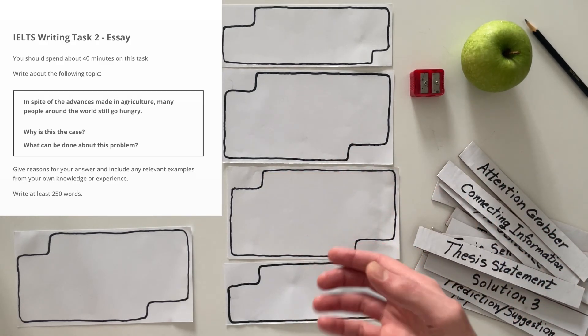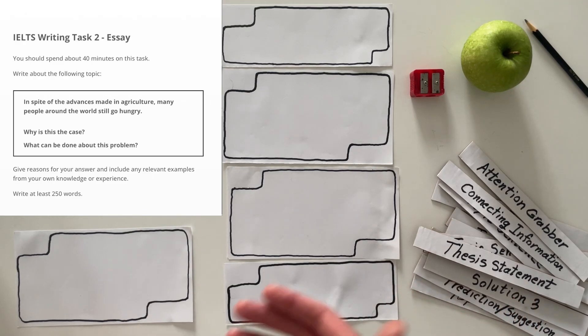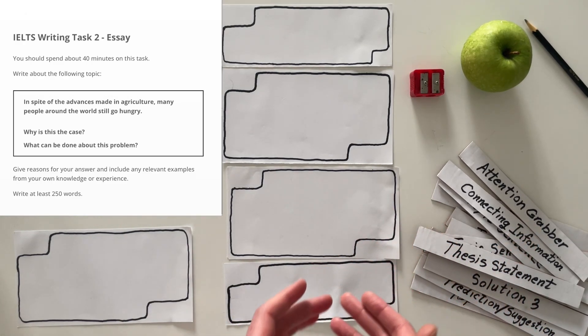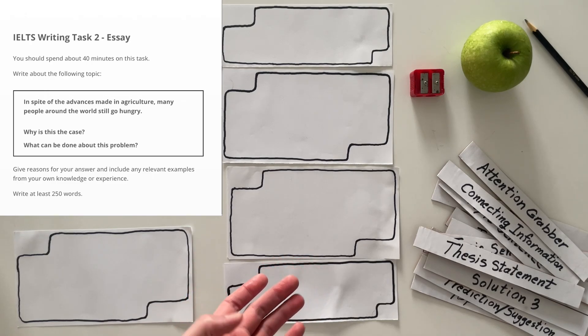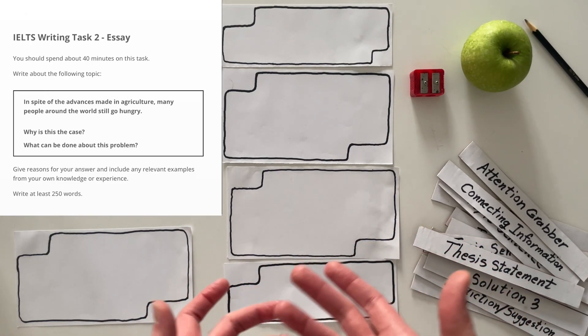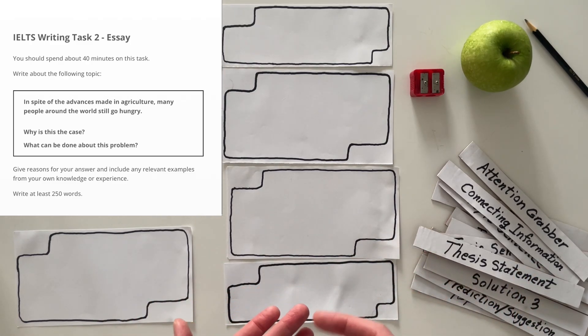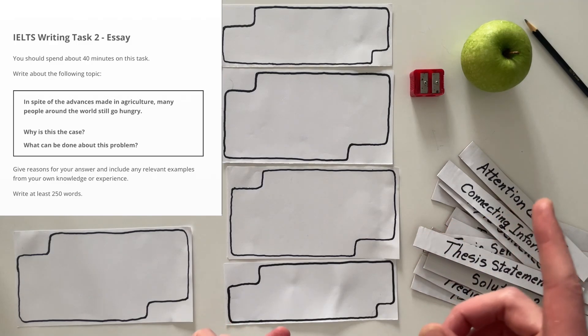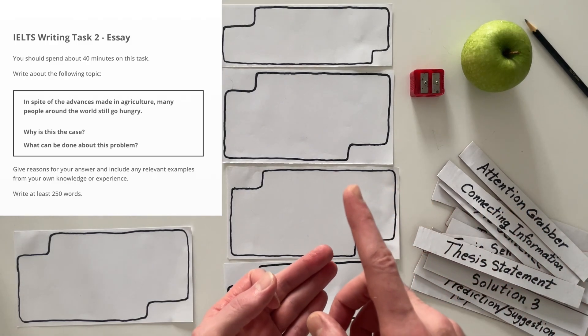And the second one, what can be done about this problem? What can you do about the price? Maybe you need to subsidize it. What can you do about the distribution network? You need to create agreements. You need to remove tariffs. You need to have an open border policy.